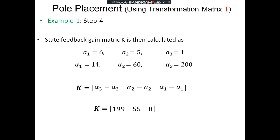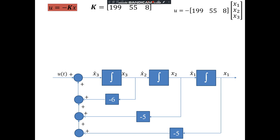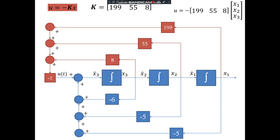Therefore K₁, K₂, K₃ are designed as the system is of third order. The representation of the existing system shows the original feedback coefficients −1, −5, −6 for x₃, x₂, and x₁. With the state feedback gain matrix applied, the system is modified accordingly. This block diagram shows the system after placing the state feedback gain matrix K with control U = −KX.